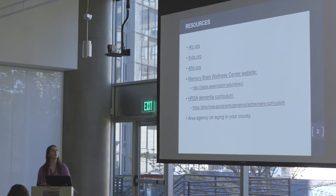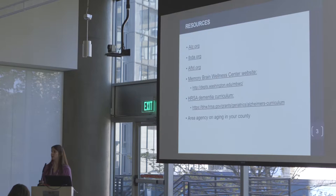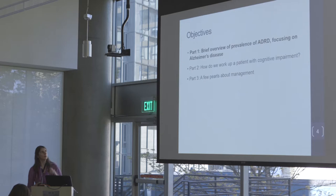Dr. Rhodes talked a little bit about the Area Agency on Aging. Every county in the U.S., but especially every county in Washington, should have an Area Agency on Aging where there's a phone number and some resources you can call. Now I'm going to talk a little bit about the prevalence of Alzheimer's.